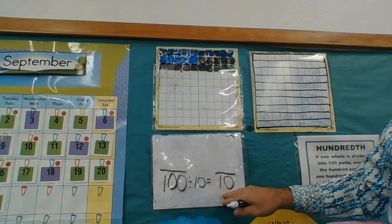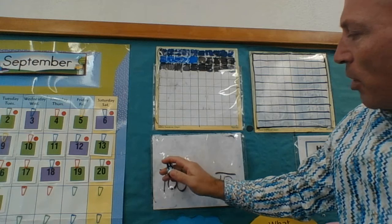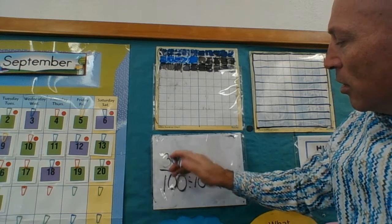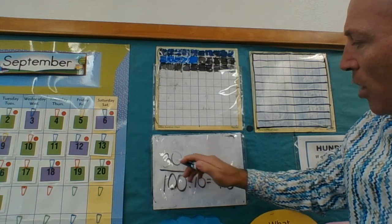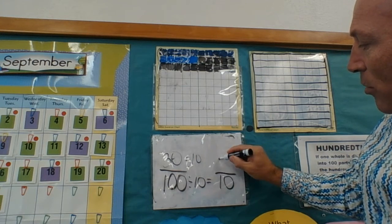And whatever I do to the denominator, I've got to do to the numerator. And up here I have 30. But whatever I do to the bottom, I've got to do to the top. And 30 divided by 10 is 3.